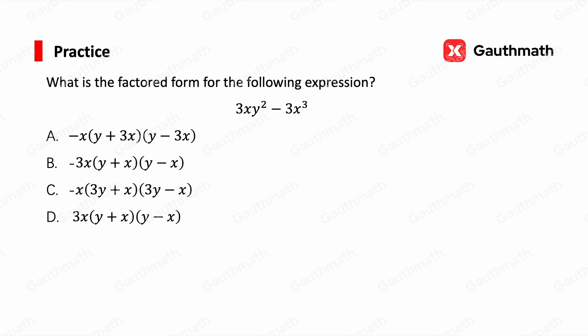Let's do another practice: what is the factored form of 3xy² − 3x³? We take out common factors first — the first term is 3x·y² and the second is 3x·x², so we take out 3x, leaving y² − x². We then apply the difference of squares formula: y² − x² = (y + x)(y − x). So the final answer is 3x(y + x)(y − x), and the correct answer is D.